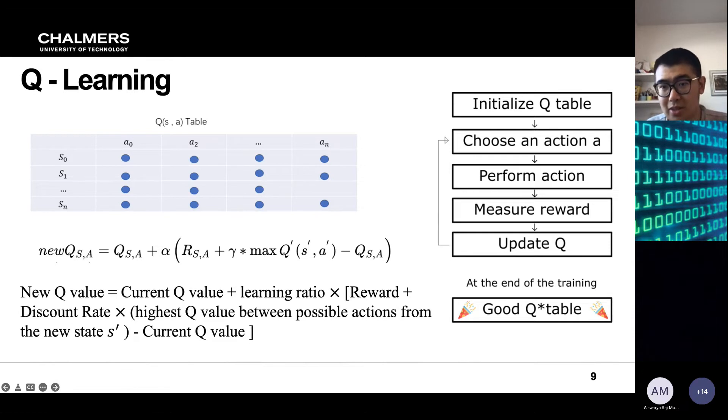And fill it in the Q table. And at the right hand side I have shown one of the diagrams for how to perform the Q-learning algorithm. So first the agent will initialize the Q table and then it will choose an action, perform the action, measure the reward and update the Q value table. And these steps will be repeated again and again until at the end of the Q training the agent will obtain a good Q table.